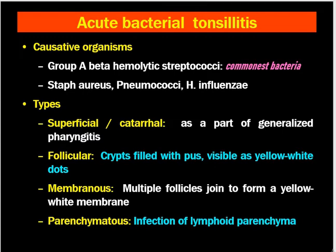The types of acute bacterial tonsillitis are: acute superficial (catarrhal) tonsillitis, which mimics part of generalized pharyngitis — there will be inflammation and congestion of the pharynx and tonsils. Next is acute follicular tonsillitis, where the crypts are filled with pus visible as yellow-white dots. This is the most common condition found in tonsillitis and the most common presentation in OPDs and emergencies.